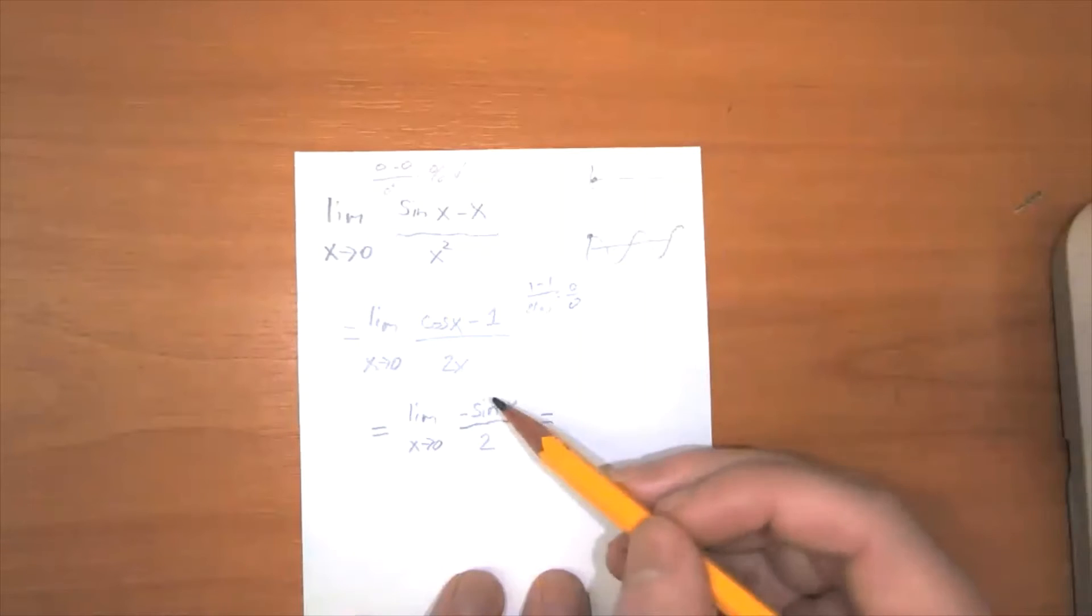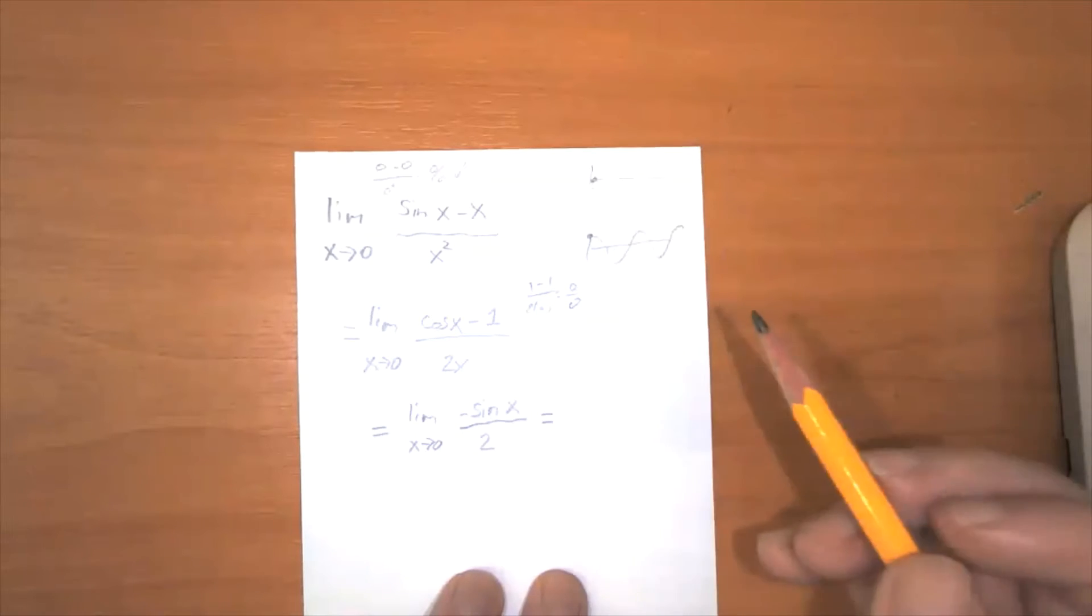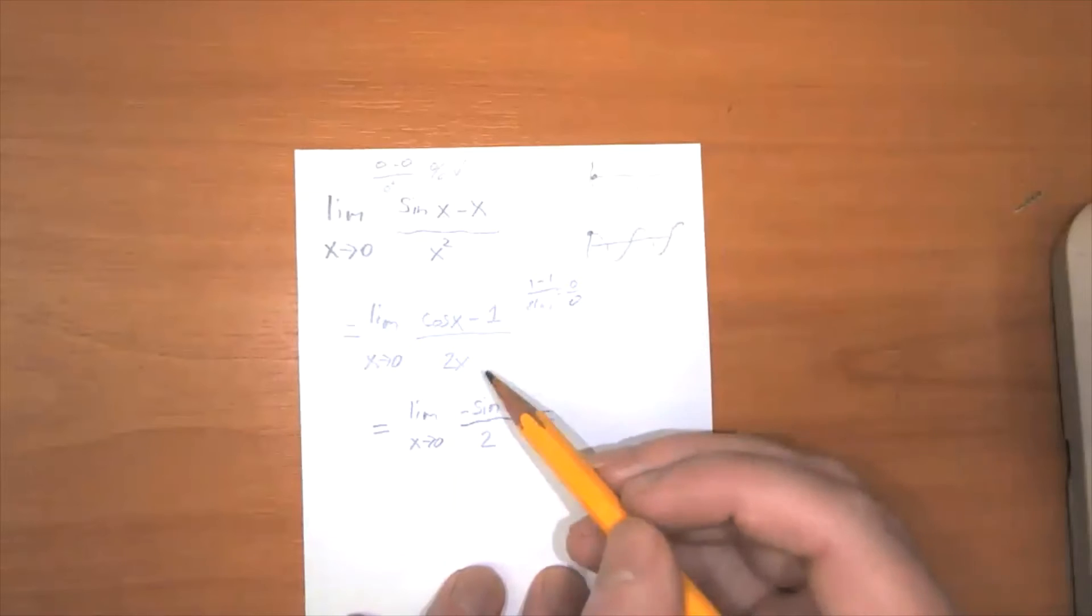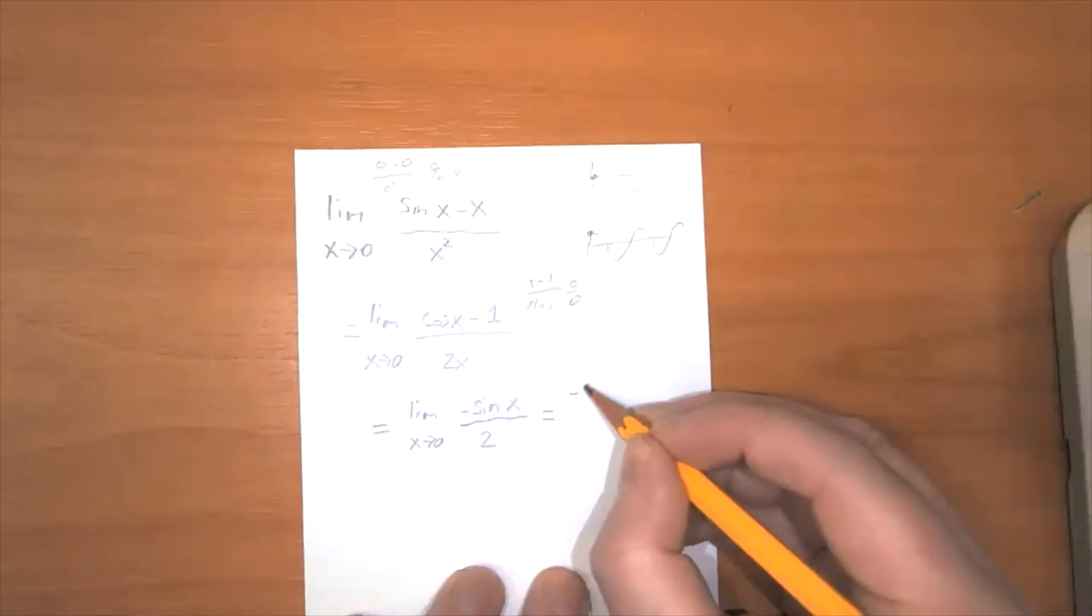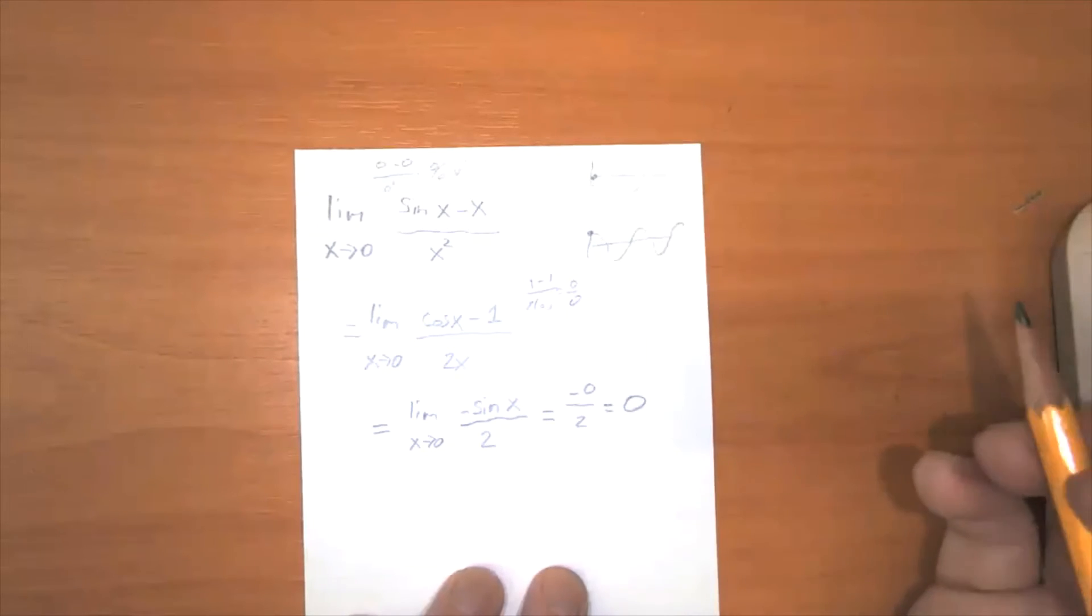And what do we get when we substitute zero into here? Because I can tell this is not going to be an indeterminate form. So negative the sine of zero, sine of zero is zero. So this is negative zero over two. That's not indeterminate. So that's equal to zero.